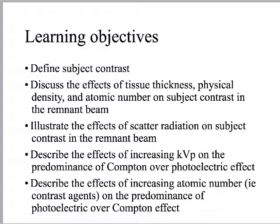So we're going to define subject contrast, which we've already kind of alluded to being something about differential absorption, attenuation, whatever you want to call it. We'll talk about the effects of tissue thickness, physical density, and atomic number. That's exactly what we were just talking about this morning, so there's some nice mesh there between this and CT. The way we're going to view this data in X-Ray is pretty much the same as the way we'll view it in CT.